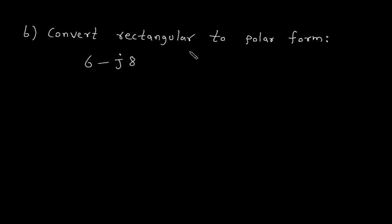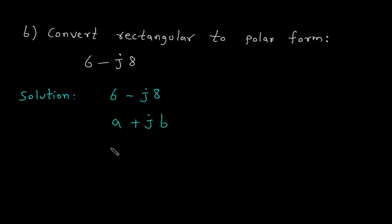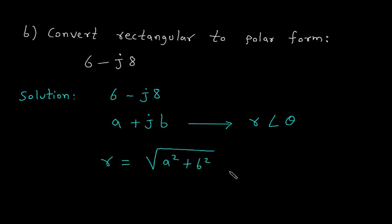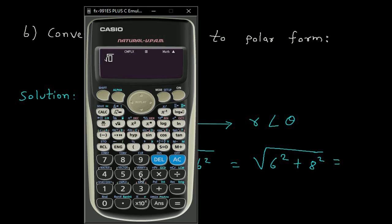Now convert rectangular form to polar form. 6 minus j8 is given in rectangular form — that is, in A plus jB form. We convert it into its equivalent polar form R at an angle of theta. To find R: R equals the square root of A squared plus B squared, which is the square root of 6 squared plus 8 squared. The square root of 6 squared plus 8 squared equals 10.